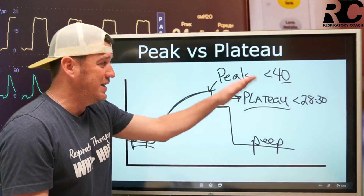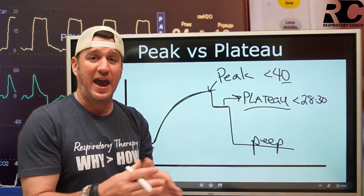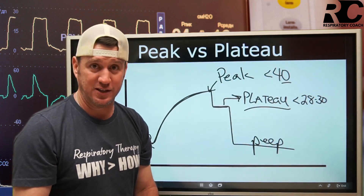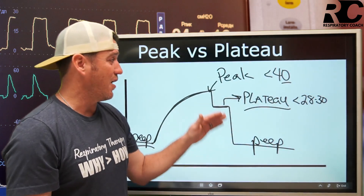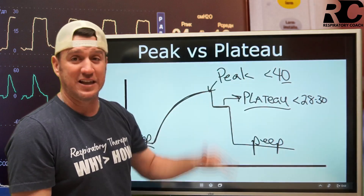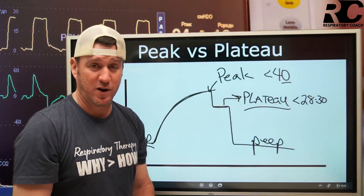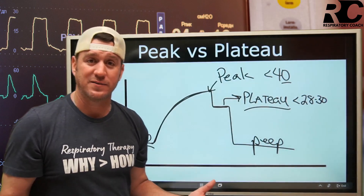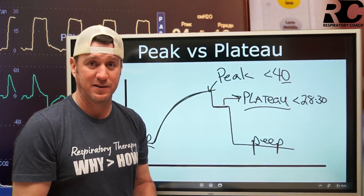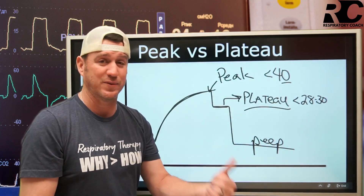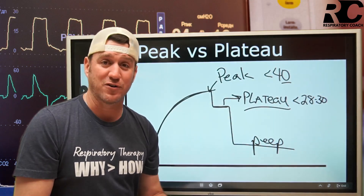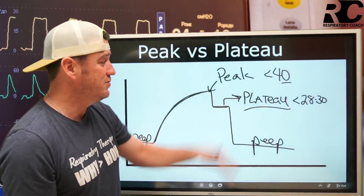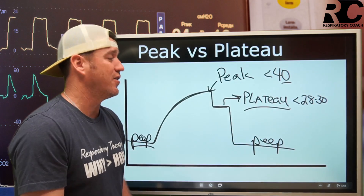We need to know these numbers because as our patients change and these numbers start to change — we were at 28 centimeters of water pressure and now we're at 32, now 36, now 44 — something is happening. Something has changed. Is it airway resistance? Is it alveolar compliance? We don't know. That's what we have to figure out. That's how we use these numbers to help guide us along this therapy.